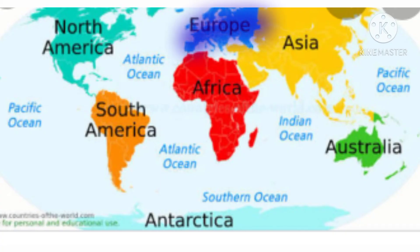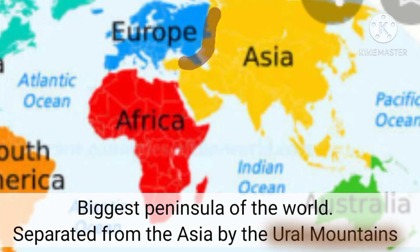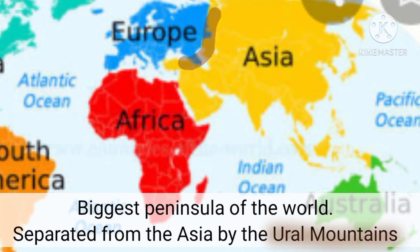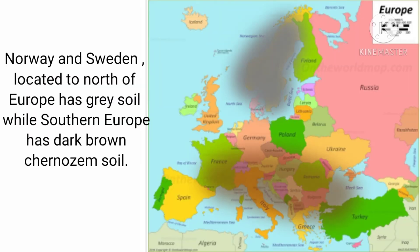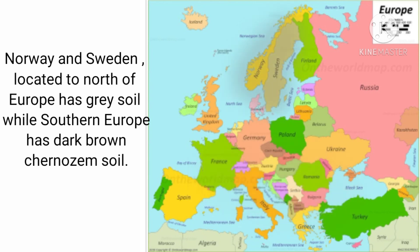Europe is the biggest peninsula of the world, separated from Asia by the Ural Mountains. Peninsula means land surrounded by water. It is spread over 1.6 million square kilometers, and 640 million people live in this continent. The Rhine, Volga, and Danube are the main rivers. Norway and Sweden in the north of Europe have grey soil, while southern Europe has dark brown Chernozem soil.